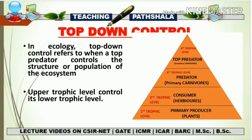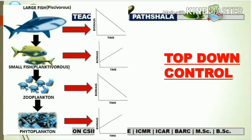To define top-down control: when an upper trophic level controls its lower trophic level, we call it top-down control. In this control, the predator controls the structure and population of an ecosystem. For example, if a consumer feeds heavily on plants, there will be a low plant population. Similarly, if a predator feeds heavily on consumers, there will be fewer consumers. Each trophic level is controlled by the level above it — primary producer by consumer, consumer by predator, and predator by the top predator.